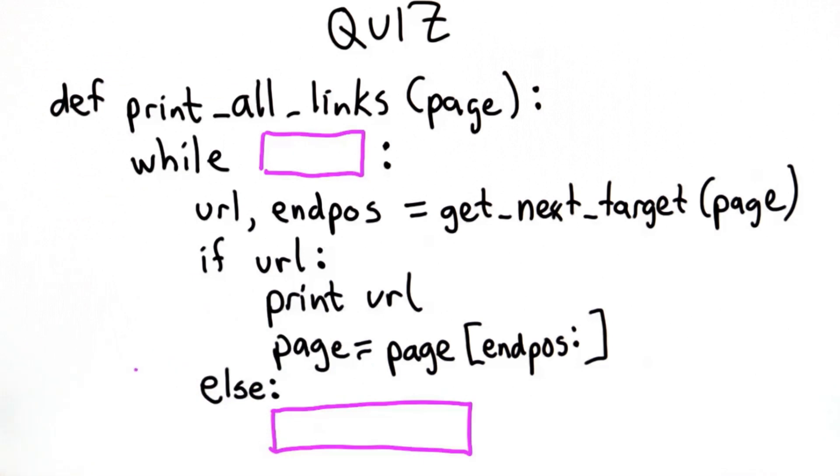So this is all we need for the code for print all links. There are two parts left for you to do as the quiz here. See if you can figure out what should go as the test condition for the while and in the block for the else. And if that's correct, you'll be able to print all the links on the page.